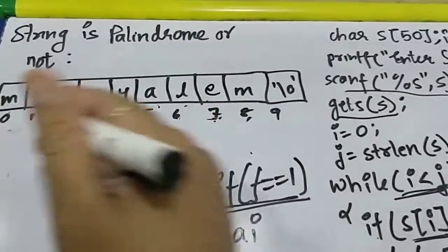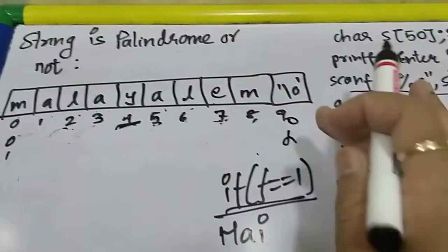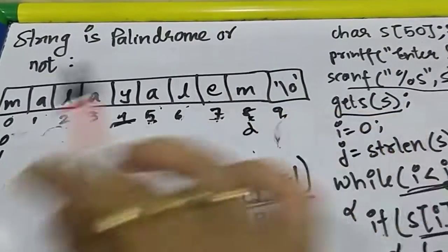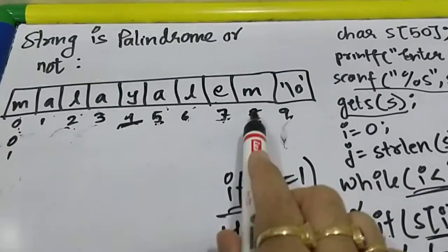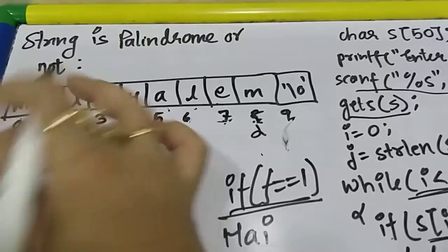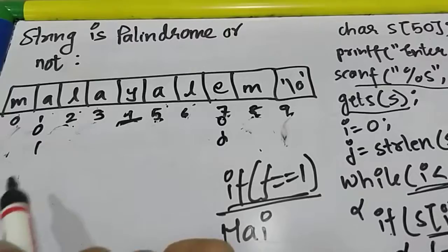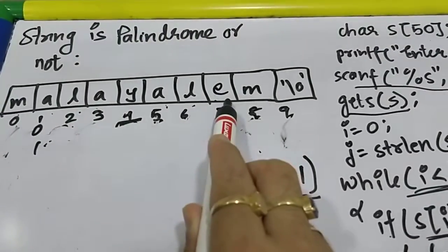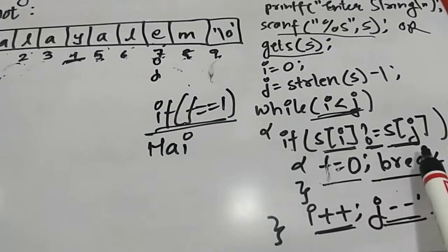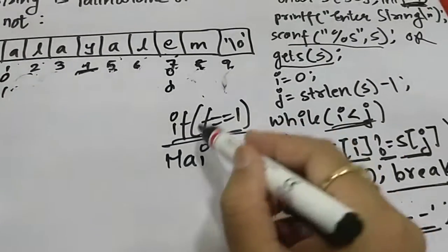So there's a mistake. Then i is zero, j is length minus one. Zero less than eight, yes. S of zero not equal to s of eight? False. i plus plus, j minus minus. Now i is at one, j is at seven. i less than j, one less than seven, yes. S of i not equal to s of j? True. S of i not equal to s of j true, flag is set to zero and break.